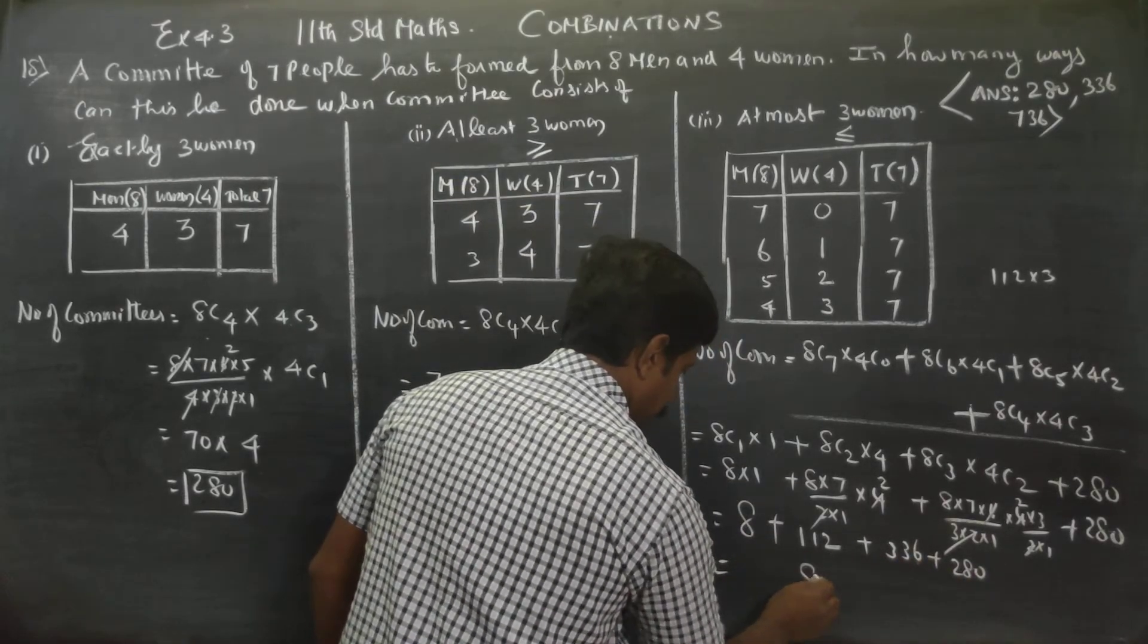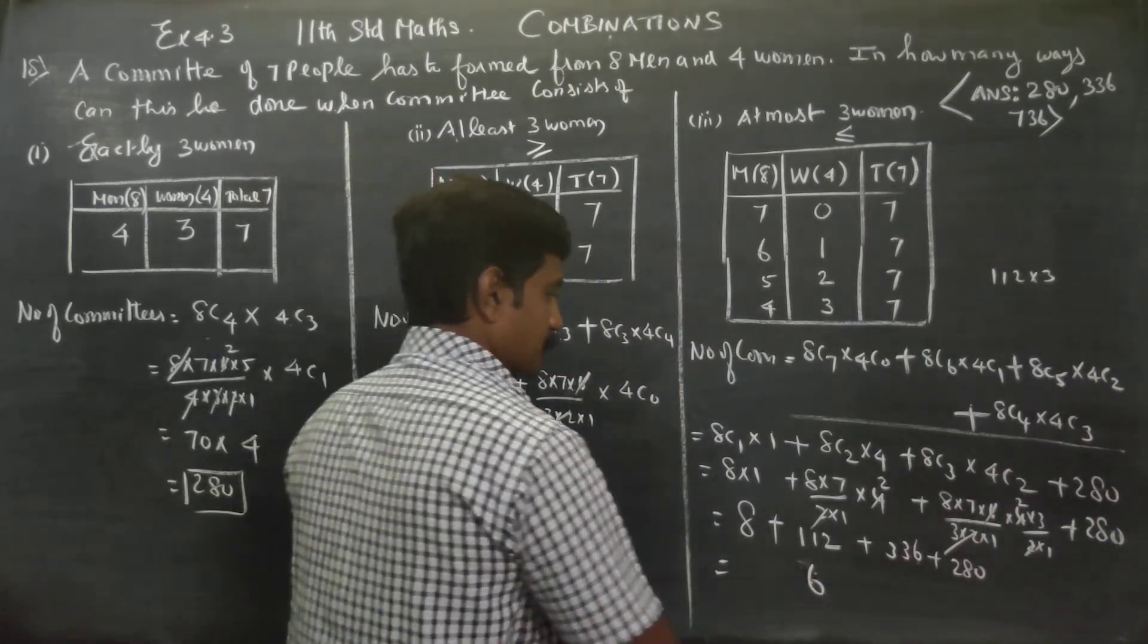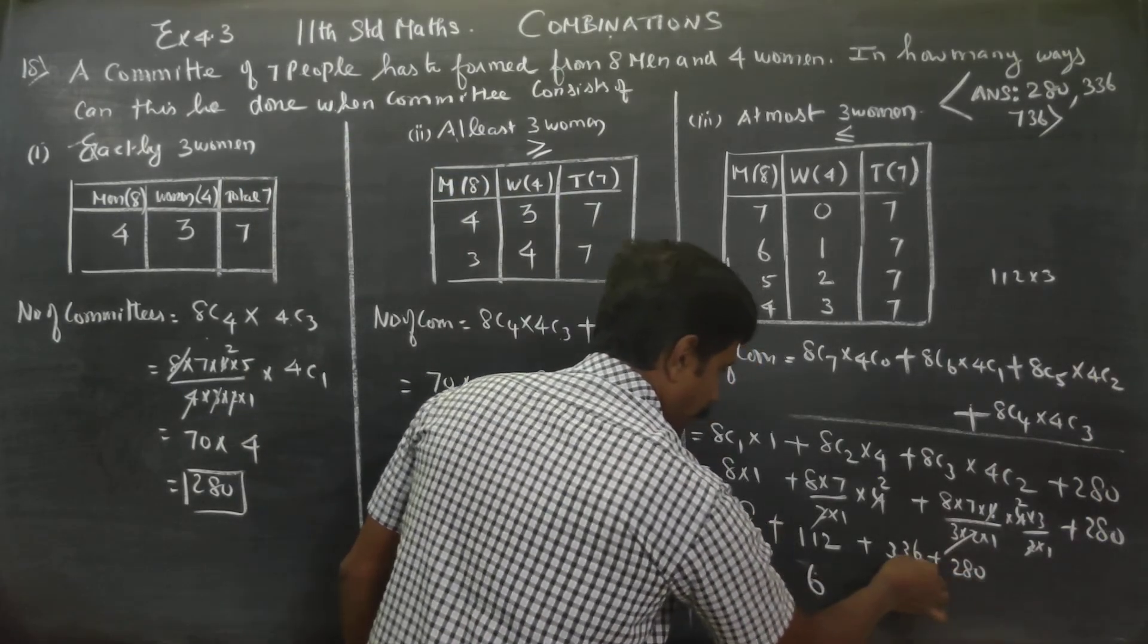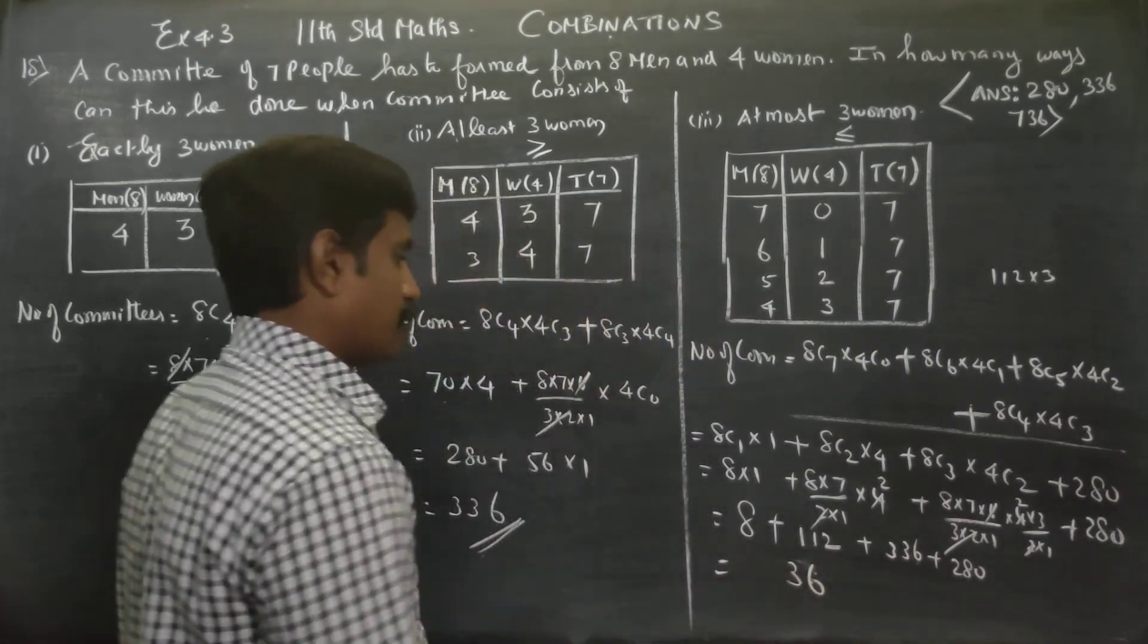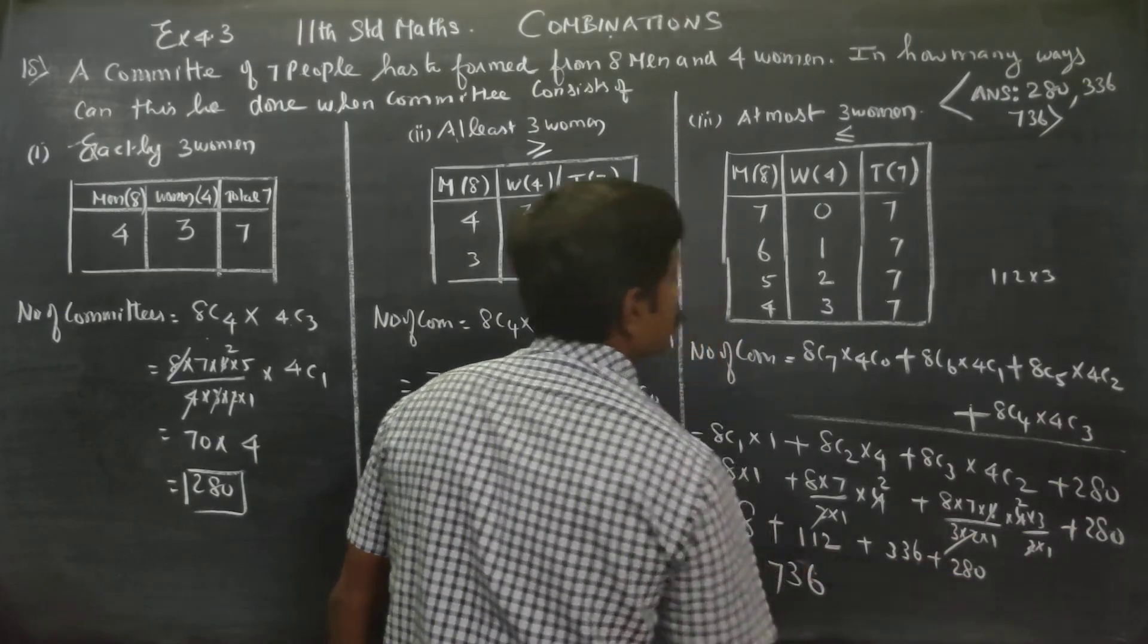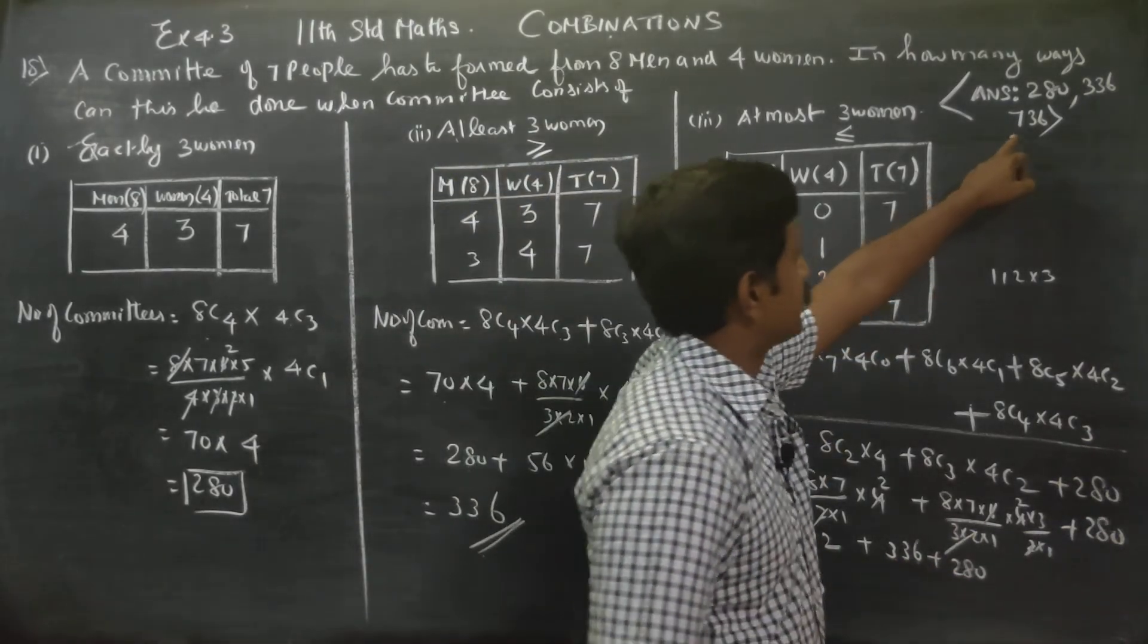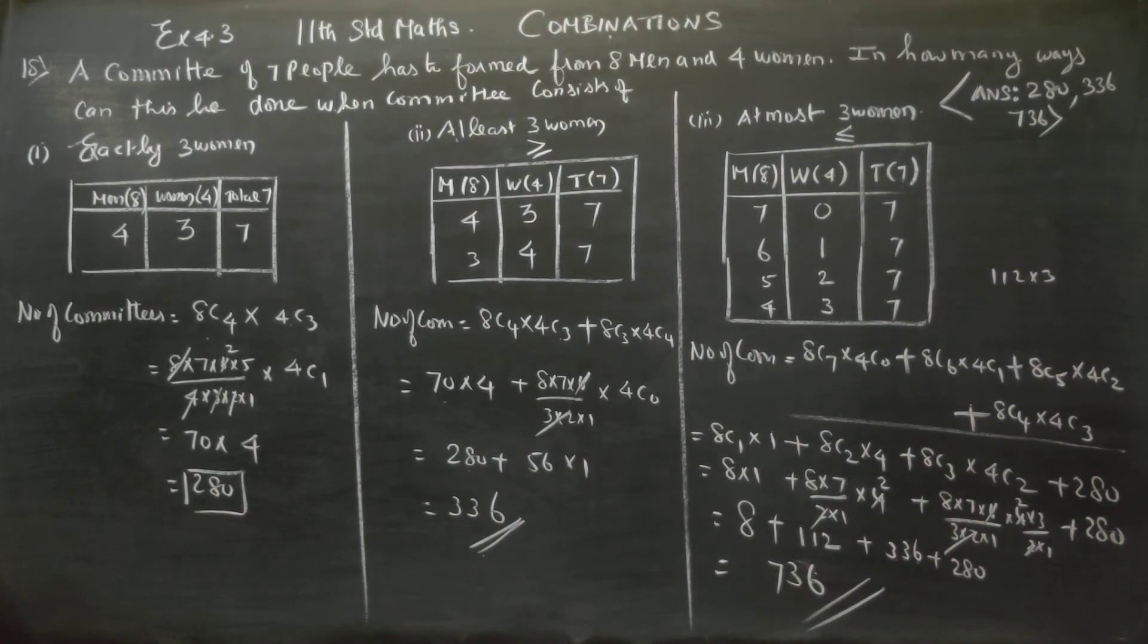9, 12, 13, 13 carry 1. 3 plus 2 is 5, 5 plus 1 is 6, 6 plus 1 is 7. Your answer is 736 committees. That's the number of committees. Thank you.